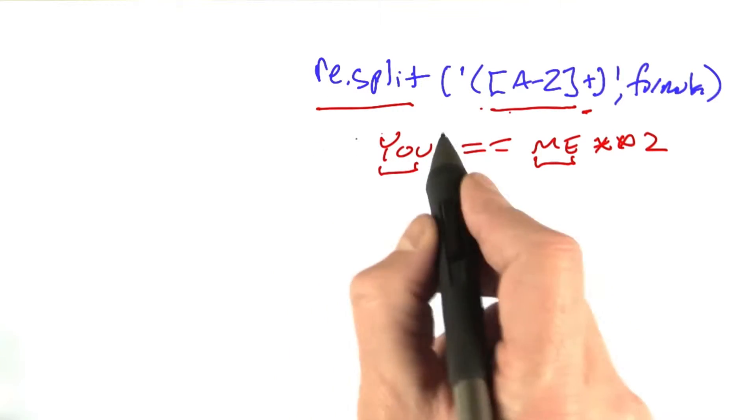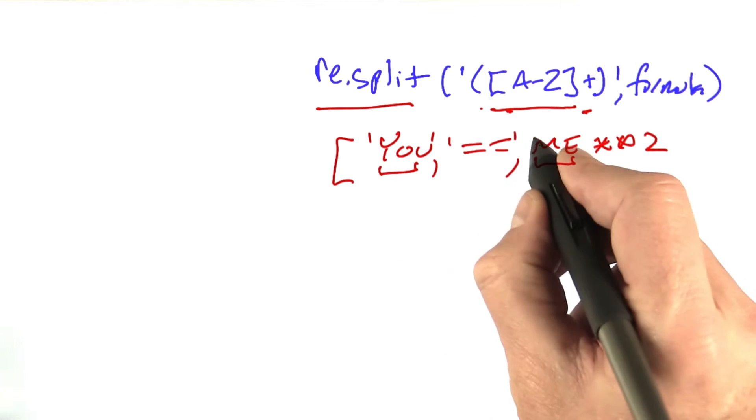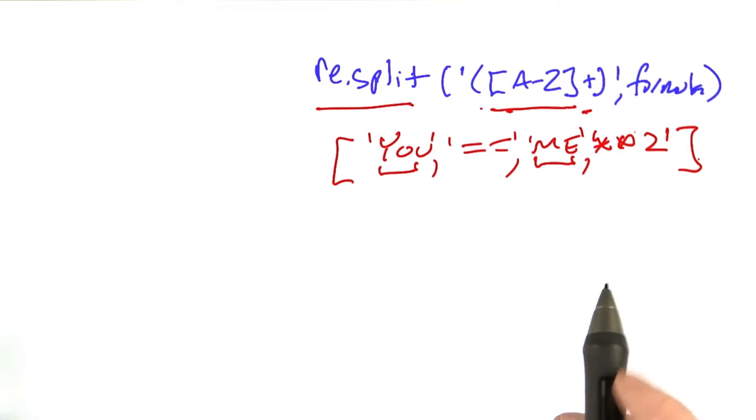re.split will return the list consisting of the parts that are found in the split plus everything in between. It'll be this type of list,